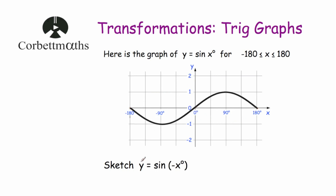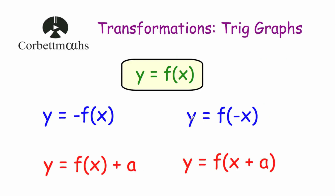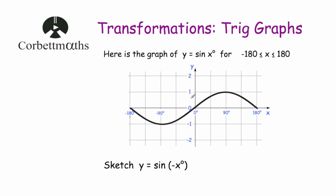Next, we've been asked to sketch y = sin(-x). The minus sign is inside the brackets, so it's a reflection in the y-axis. The point (0°, 0) remains where it is. The point (90°, 1) reflects to (-90°, 1); (180°, 0) reflects to (-180°, 0); (-90°, -1) reflects to (90°, -1); and (-180°, 0) reflects to (180°, 0). Drawing a smooth curve through those points gives us the graph of y = sin(-x).